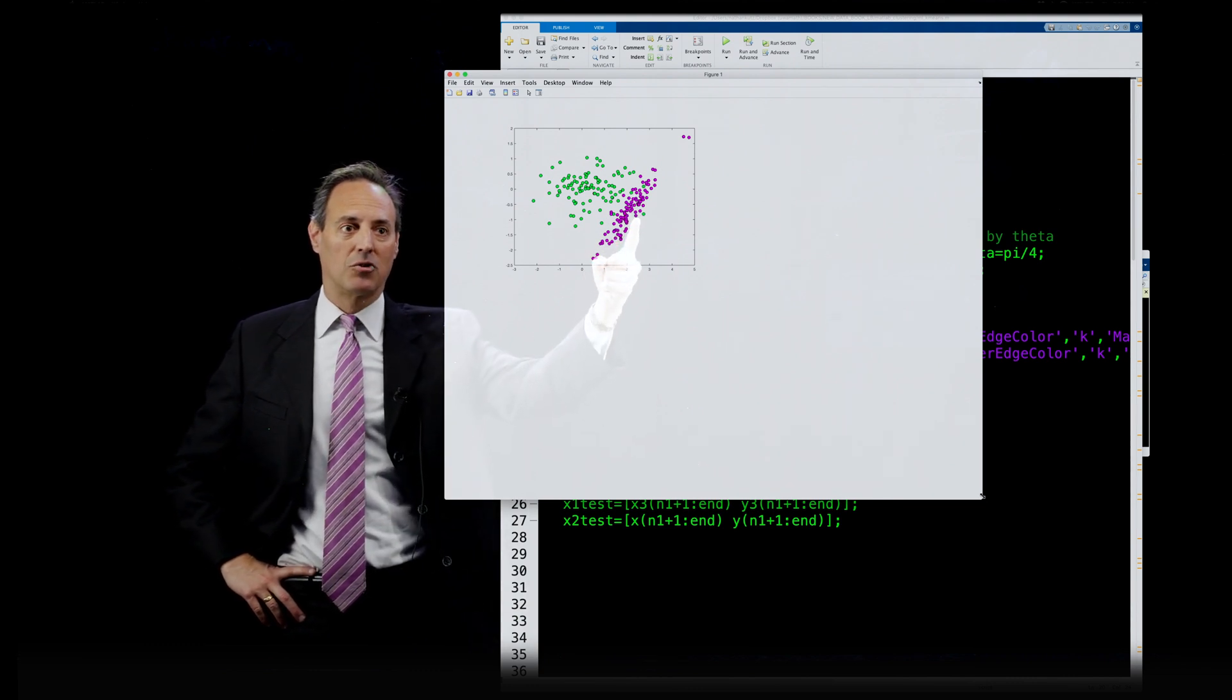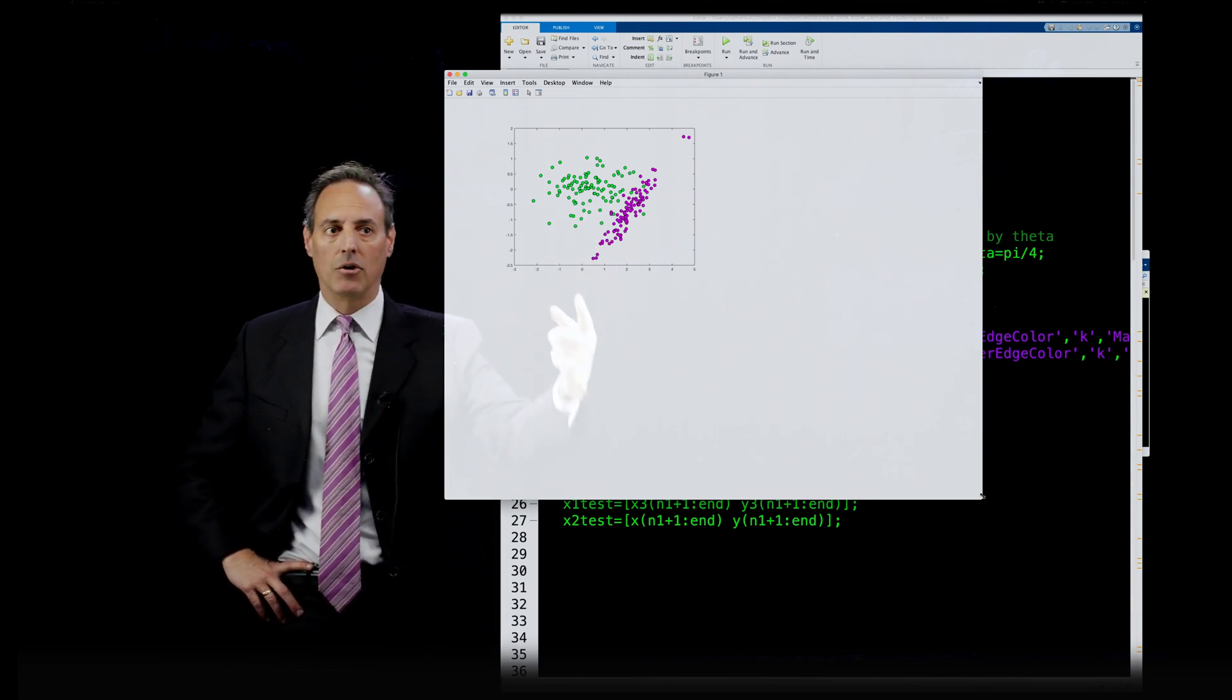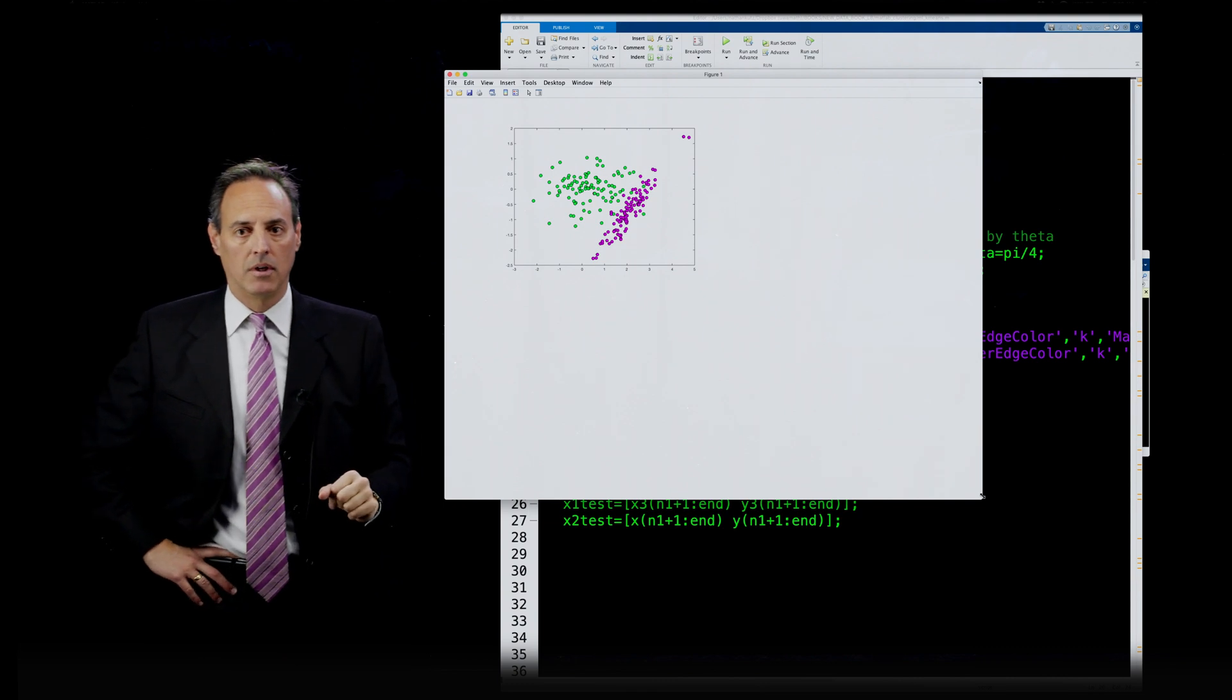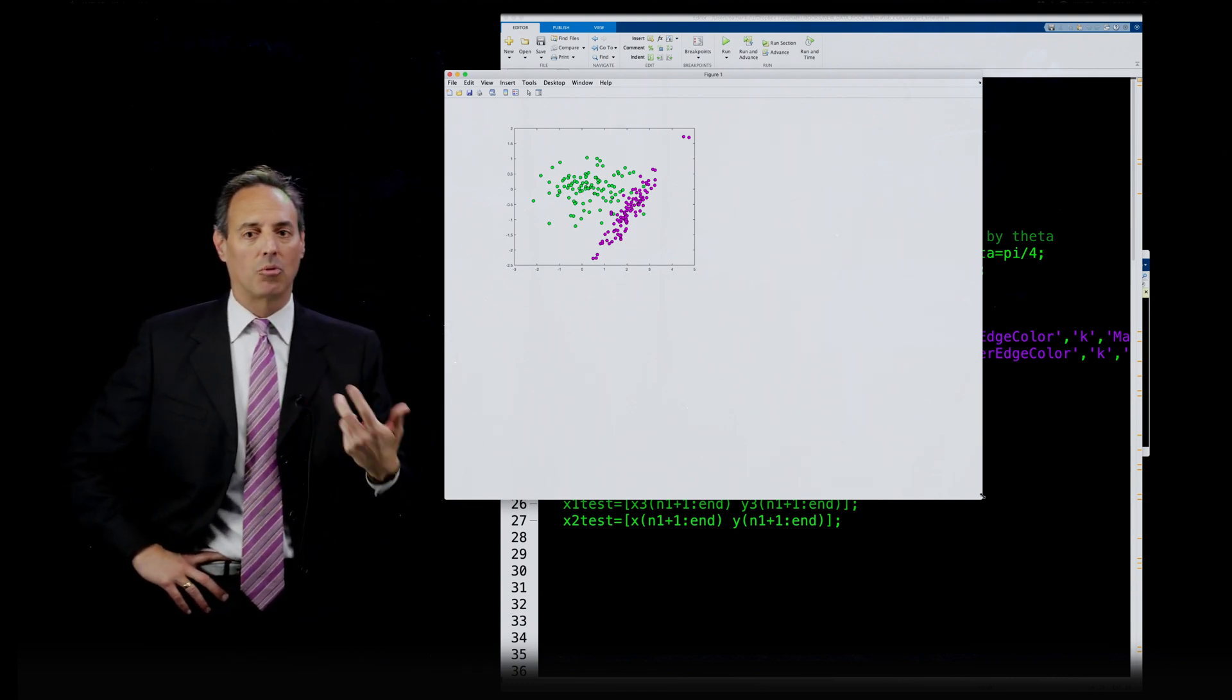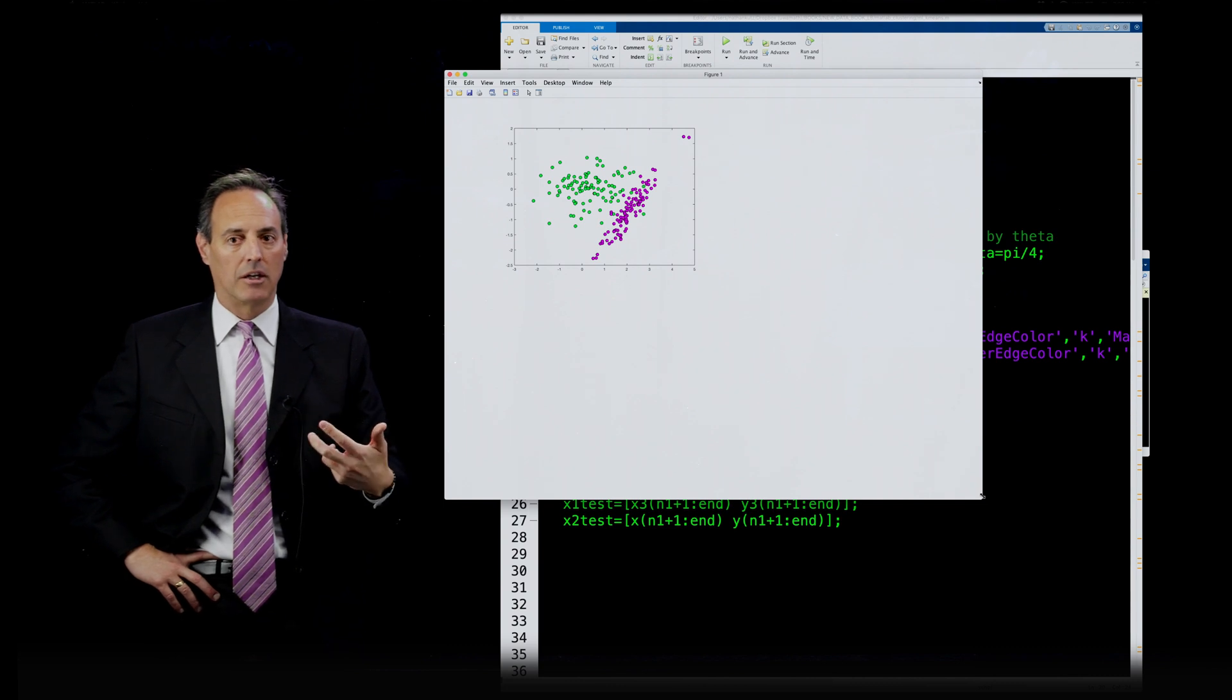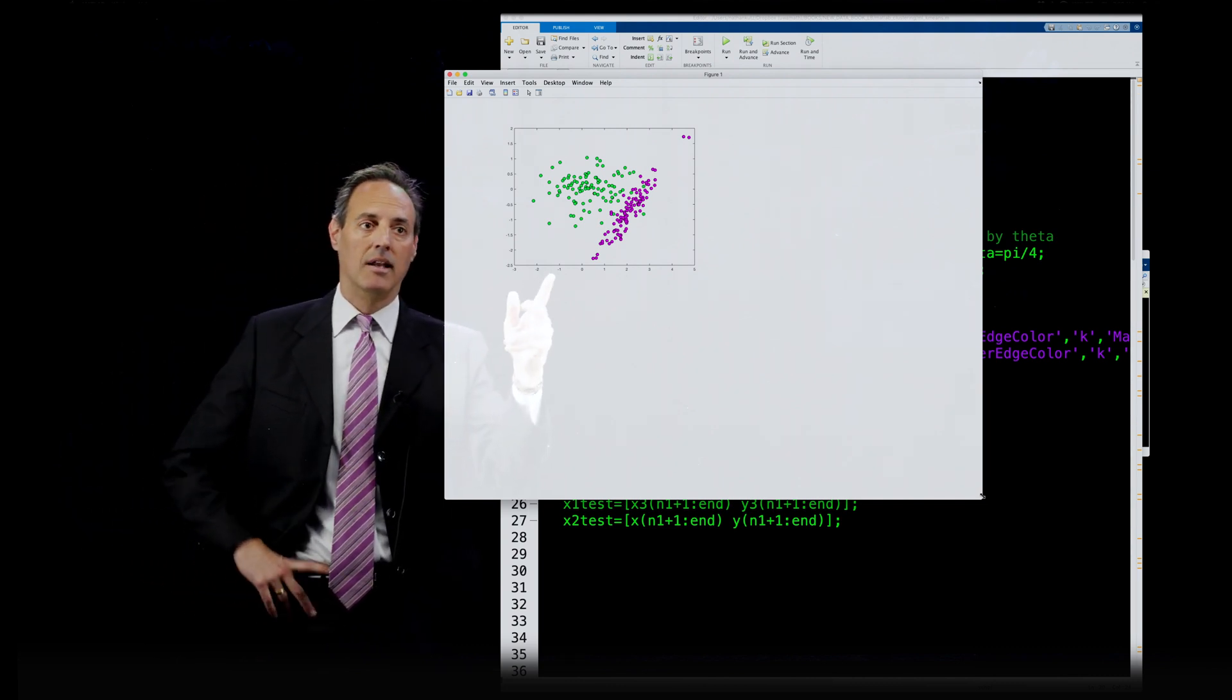So when you do clustering, what's going to happen to, like for instance, this green ball right there? That green ball right there will probably be labeled as magenta incorrectly, even though it came from the green distribution. But this is the, this is the way data science goes. The point is how many do you get correct? What's your probability of getting it correct?